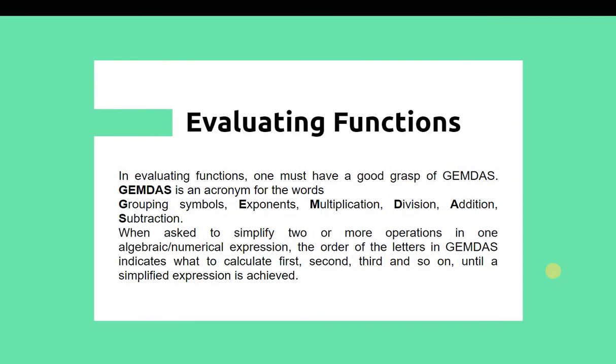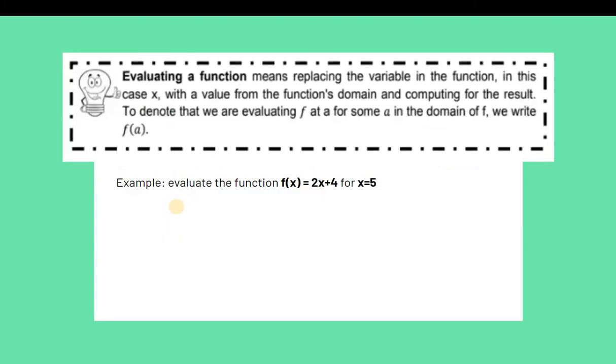In evaluation of functions, one must have a good grasp of GEMDAS. GEMDAS is an acronym for the words: Grouping symbols, Exponents, Multiplication, Division, Addition, and Subtraction. When asked to simplify two or more operations in one algebraic numerical expression, the order of the letters in GEMDAS indicates what to calculate first. If there is multiplication and subtraction in the given, then you would have to do multiplication first because it falls first in the GEMDAS order.